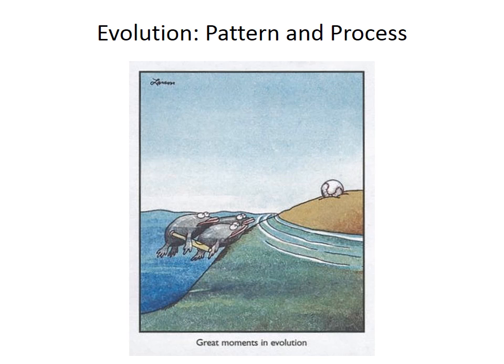These slides summarize what the fossil record can tell us about the patterns of morphological change during evolution and the processes that contribute to those patterns. The fossil record is the only way to observe evolution over long timescales, and a number of important aspects of evolutionary theory were first proposed by paleontologists.